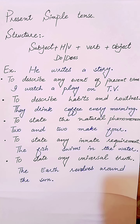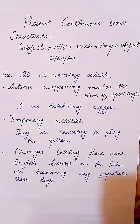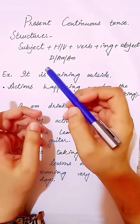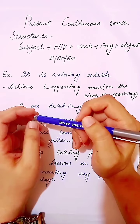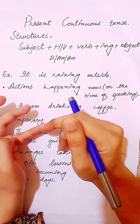Now let's move on to present continuous tense. The present continuous tense describes an action that is going on at the present time. The recognition of this tense is that '-ing' comes at the last of the verb. The structure of simple sentence: subject, then helping verb, then verb plus '-ing', then object. We use three helping verbs in present continuous tense: is, are, and am.